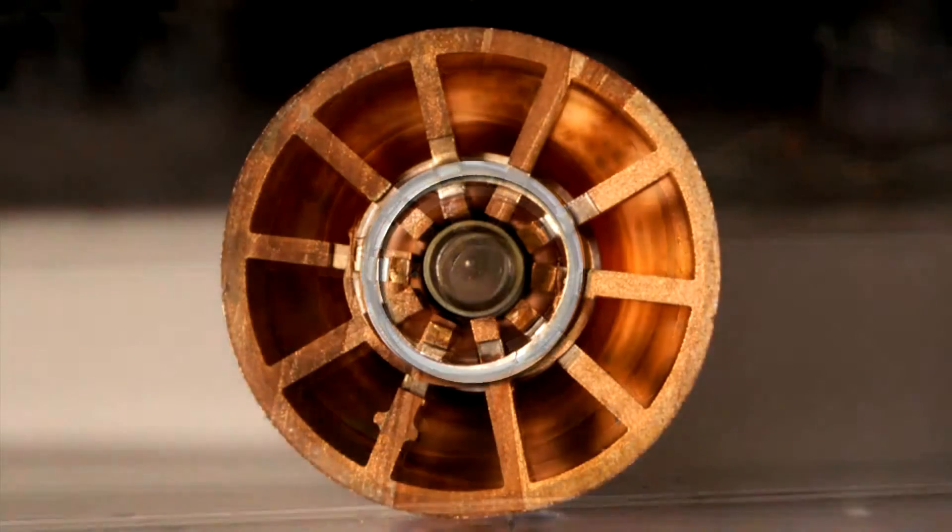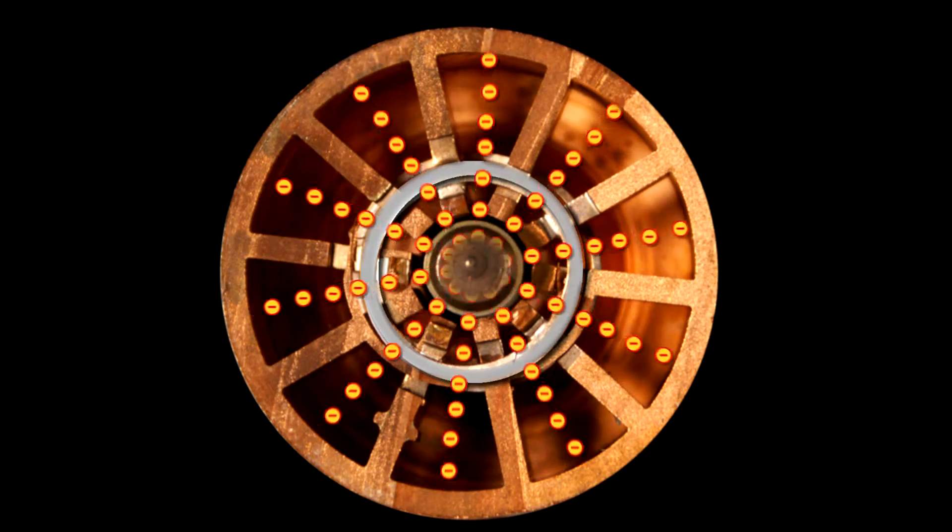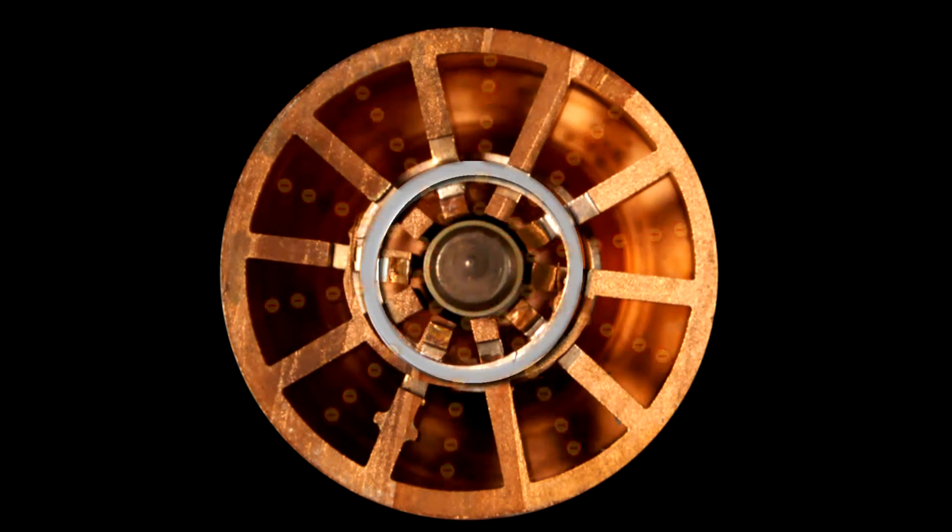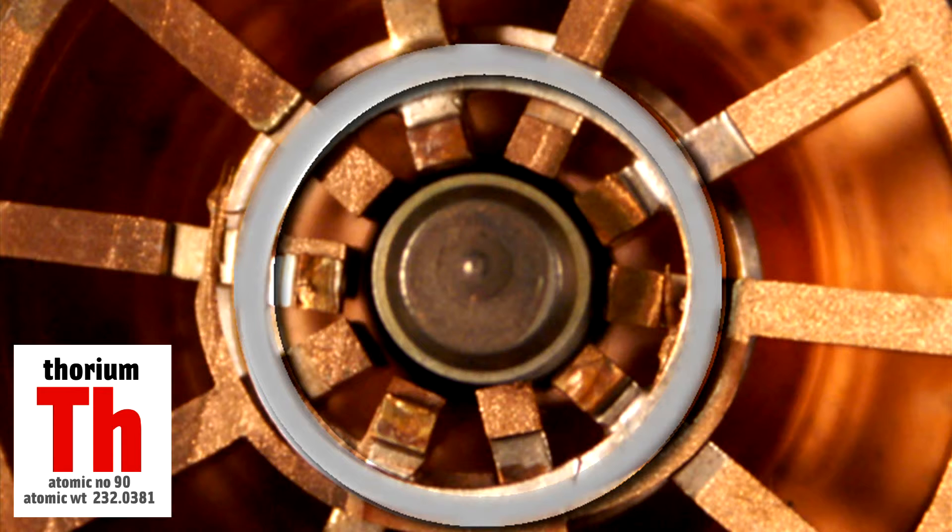You apply a large voltage across both the inner filament and the circular copper outside. This voltage boils electrons off the center filament and they fly toward the circular copper section. The filament is made from tungsten and thorium: tungsten because it can withstand high temperatures, and thorium because it's a good source of electrons.